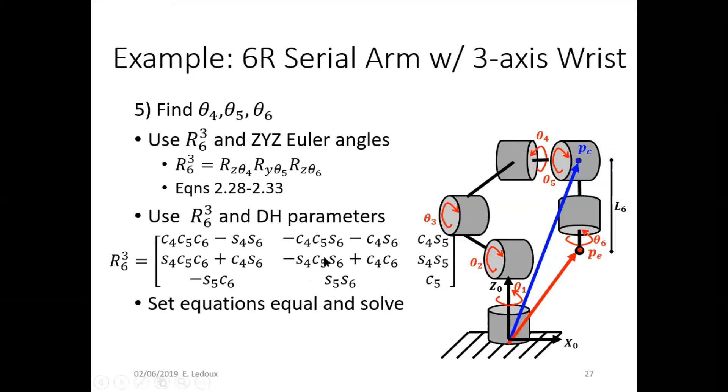So that looks super complicated, but if you look at this, you can actually break it down smaller. So this bottom right corner only has theta 5 in it. It's cosine of theta 5. So you can just use inverse cosine to get theta 5, and then once you know theta 5, then you can plug that into these two to get theta 6 and plug it into these two on the right column to get theta 4. So then you end up not actually having to use these other more complicated ones in the top left side of the matrix.